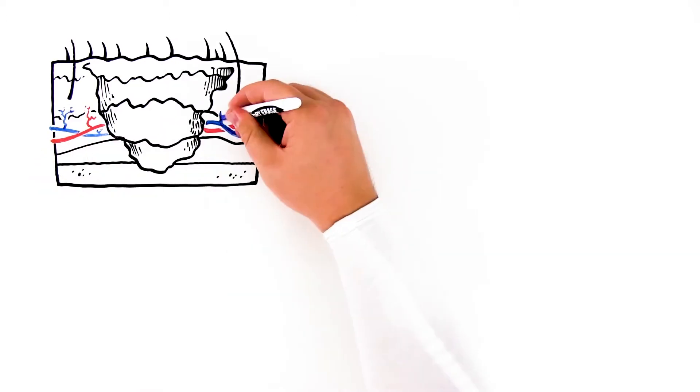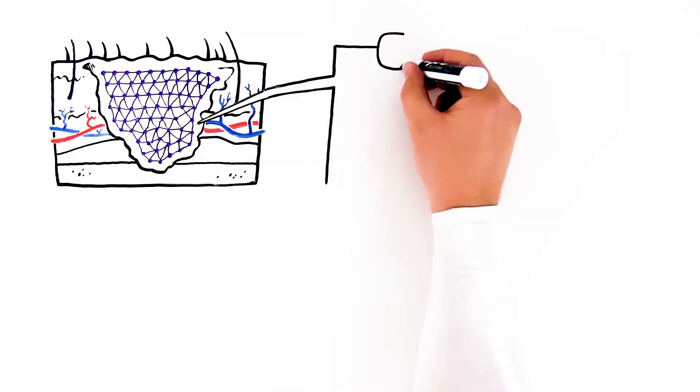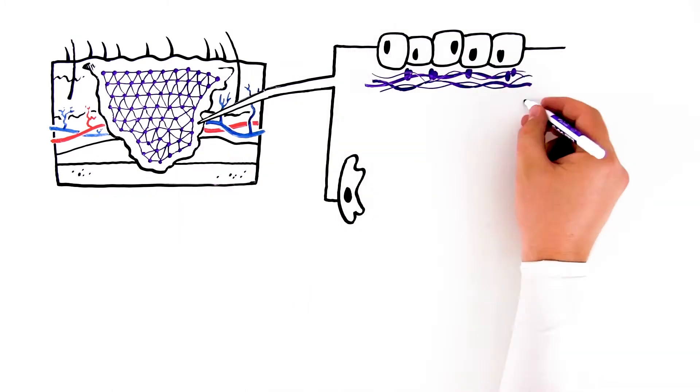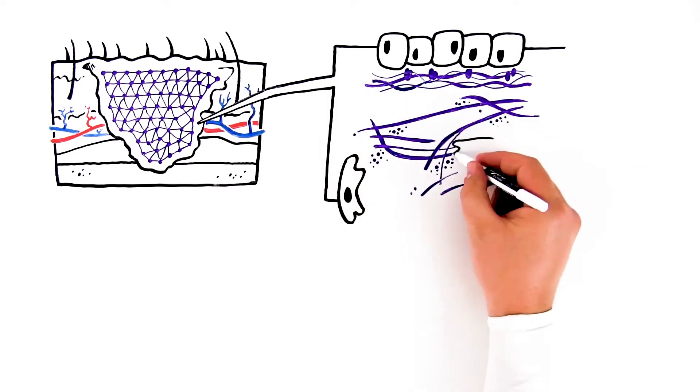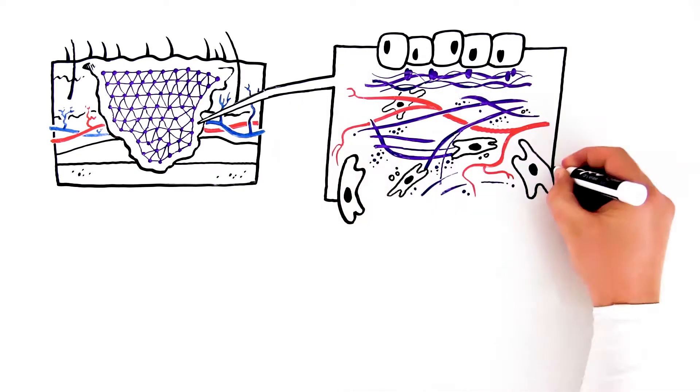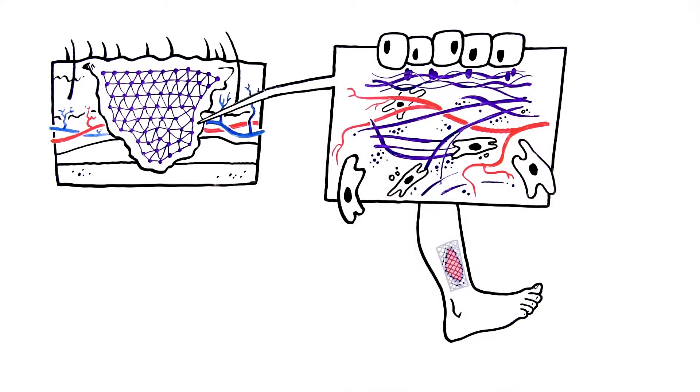When tissue has been damaged due to disease or injury, Endoform acts as a temporary scaffold, allowing the patient's own cells to migrate into the Endoform, establish a new blood supply and grow new tissue. When Endoform's job is done, it is completely replaced by the patient's own tissue.